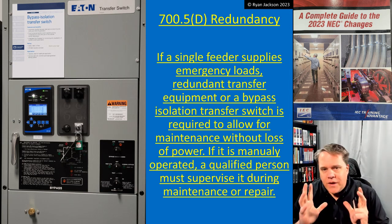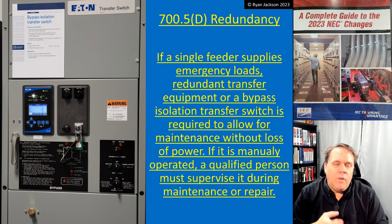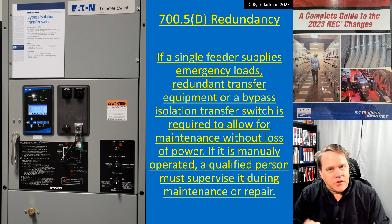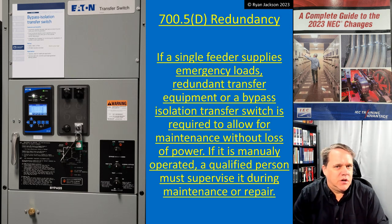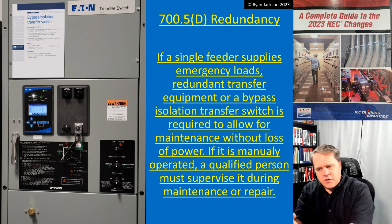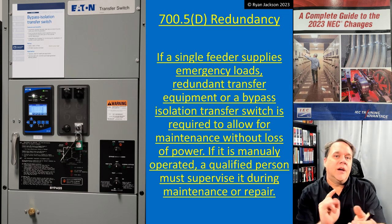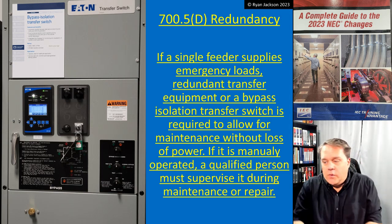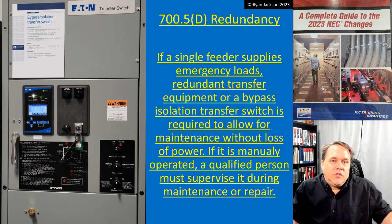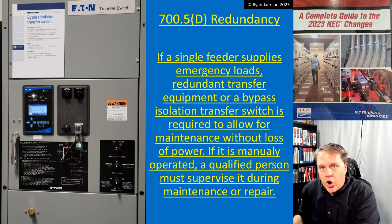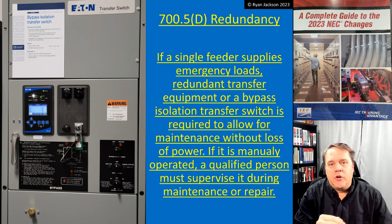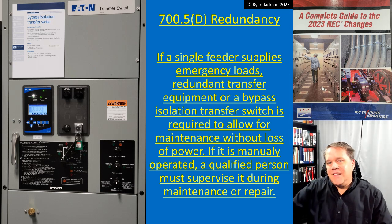If we have an emergency system generator, we might need to take it offline to maintain it. A couple of code cycles ago we added a requirement for what a lot of people call a docking station, which means you can remove the generator from service and hook up a temporary portable generator — just in case the utility loses power while you're in the middle of maintaining the generator and can't jeopardize the lives of all occupants.